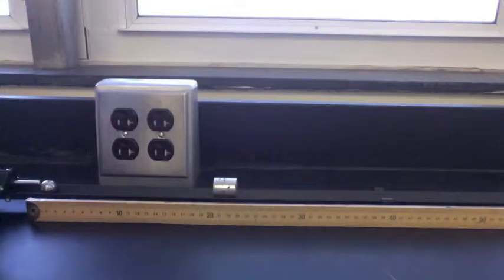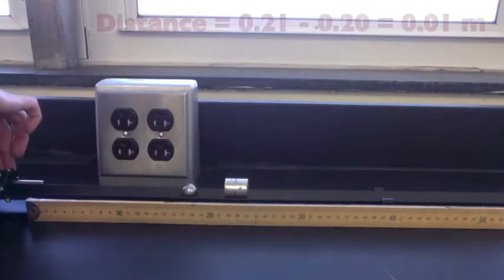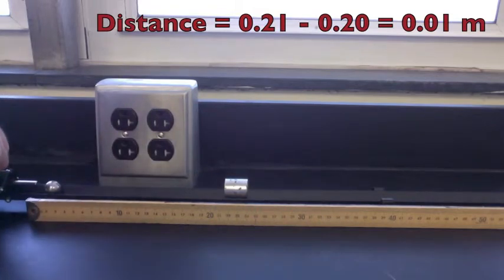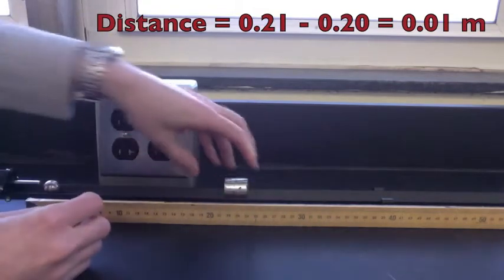Here, the marble is launched from the first notch, which is the lowest force and therefore, slowest velocity. The zinc cylinder was pushed from the 0.2 meter mark to the 0.21 meter mark. It was pushed 0.01 meters backwards.